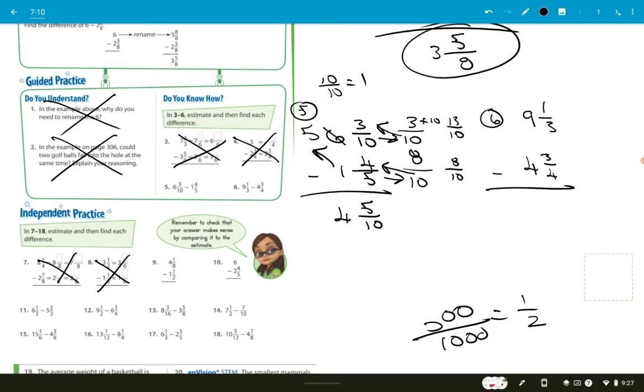So here we have an answer of 4 and 5 tenths. What does that reduce down to? 4 and 1 half. So start reducing those fractions. And again, how you reduce a fraction. What if I had 8 over 10? Think about a number that goes into 8 and into 10 evenly. You can start small. It may take 2 or 3 steps. That's fine. Ms. Noble, what do you... 2. How many times does 2 go into 8? 4. How many times does 2 go into 10? 5. 8 tenths reduces down to 4 fifths.